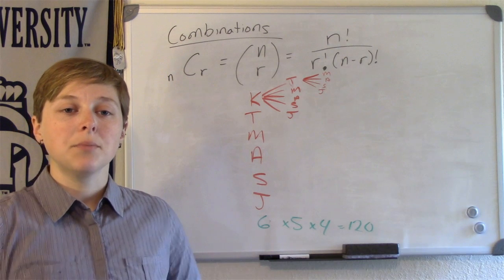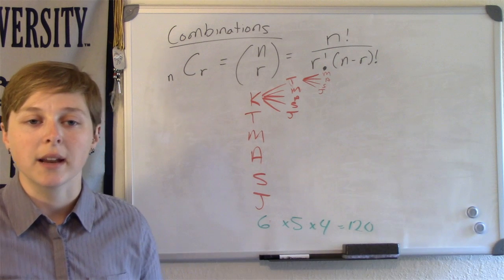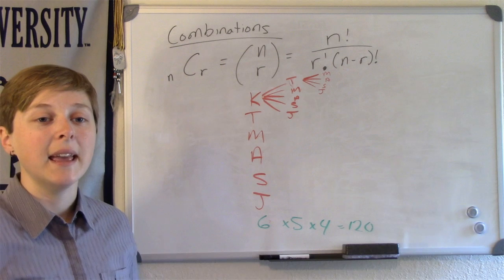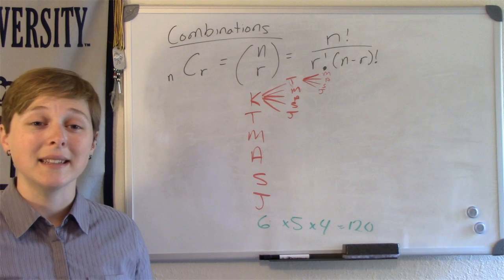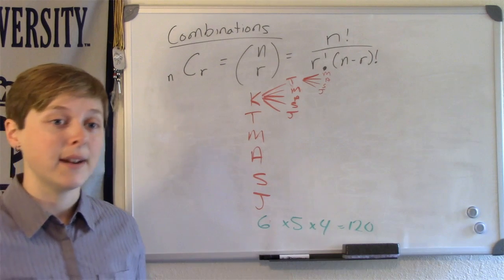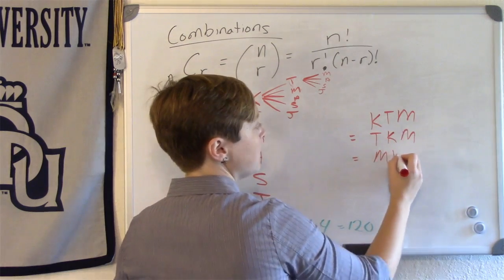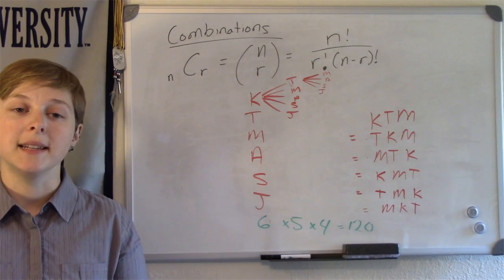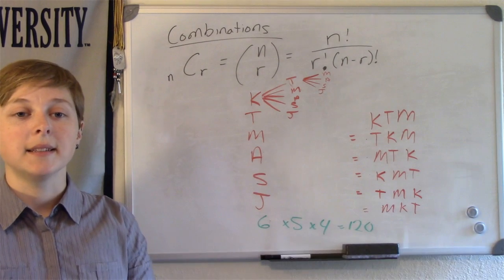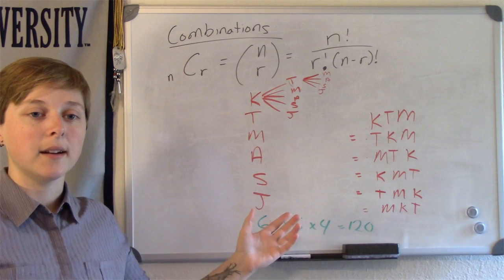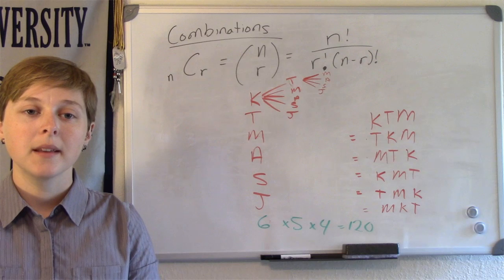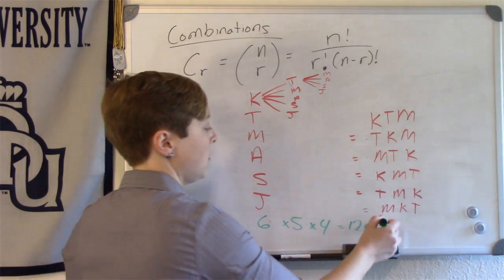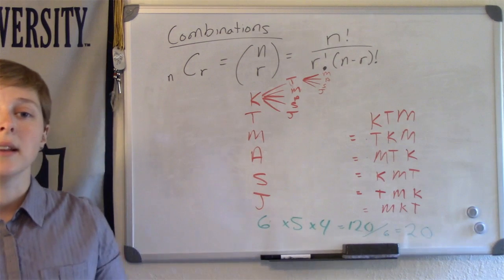The difference between this problem and the previous problem is that it doesn't matter who is first, second, or third. Therefore, Kim, Tina, and Max is the same thing as Kim, Max, Tina, which is the same thing as Tina, Kim, Max, etc. The number of unique possibilities is then divided by 6, since 6 of these possibilities are the same when order doesn't matter. That is, 6 times 5 times 4 divided by 6, which equals 20, is the number of total different combinations.